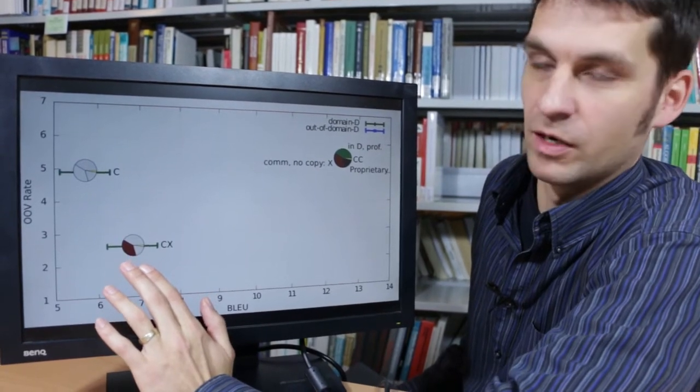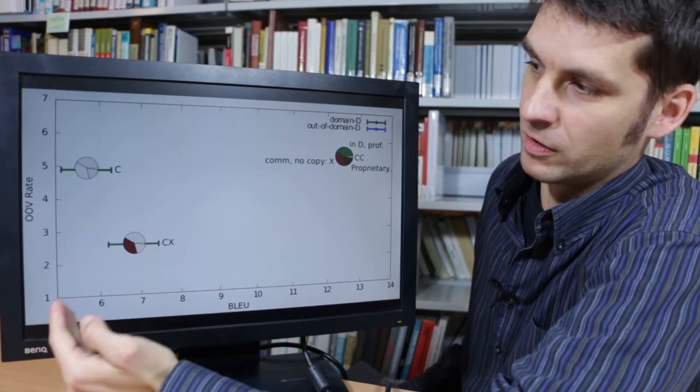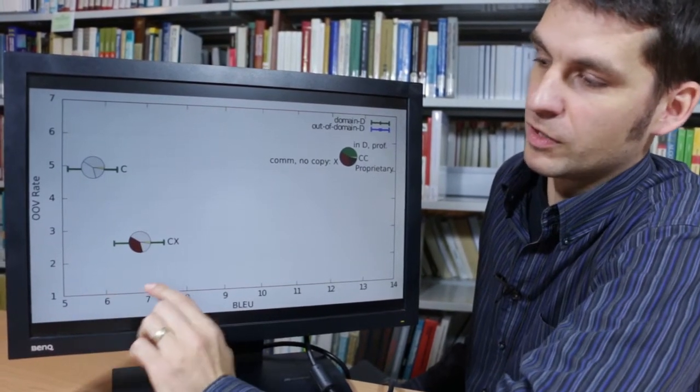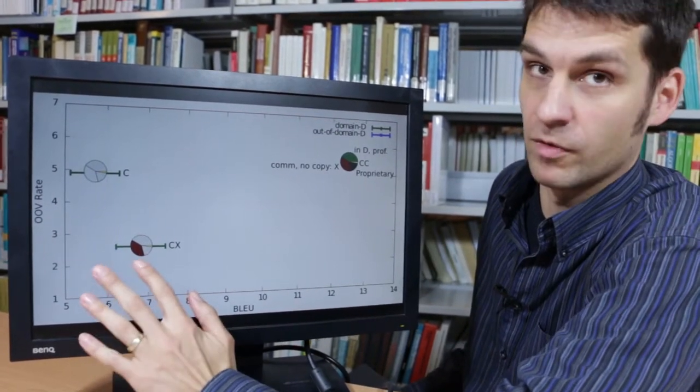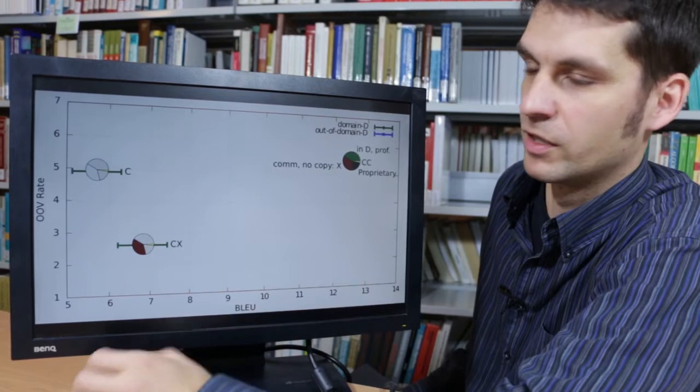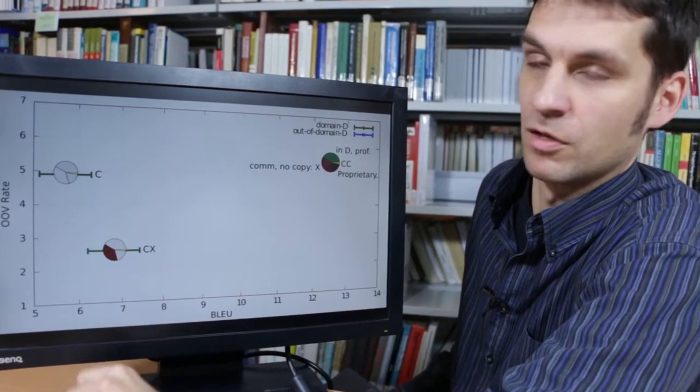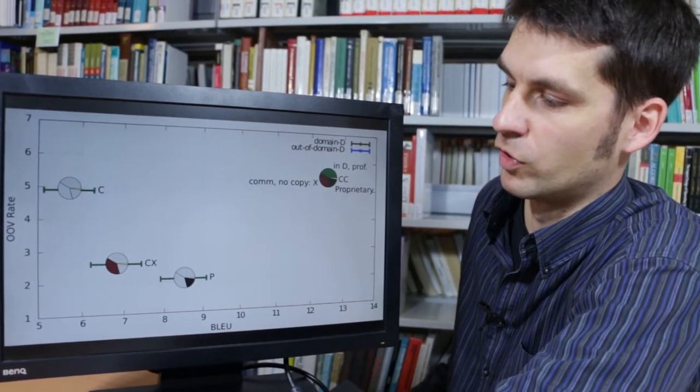If we combine that together with the other part of community supplied data, the out-of-vocabulary rate decreases quite a bit because that's a lot of data that we are adding. But the BLEU doesn't increase very much. And that's because we are still staying out of domain. These texts are not very much related to the news text that we are translating. And also because this is non-professional translators, so they do not produce nice sequences of words.